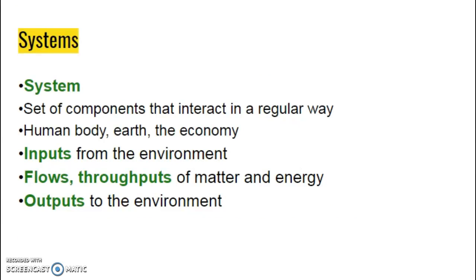This is a huge idea in environmental science — the idea of a system. A system is just a set of components that interact in a regular way. We're going to mostly look at the earth as our closed system, but we could have a system within a system. Think about the human body: we have circulatory systems and digestive systems, all different systems within the body. One that we'll look at a lot in this class is the economy — it's a system. If we're talking about the law of conservation of matter, our system is the earth. If we're talking about the law of conservation of energy, our system is the universe.